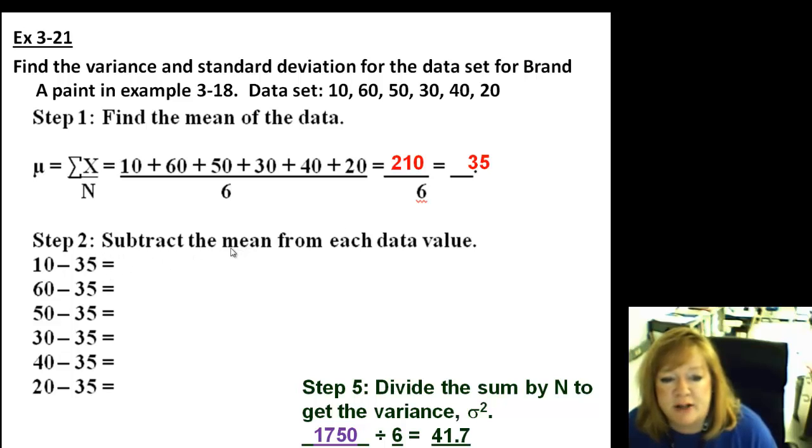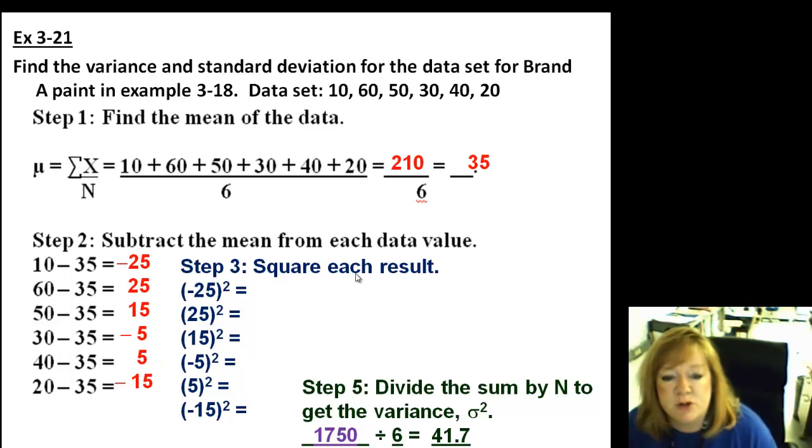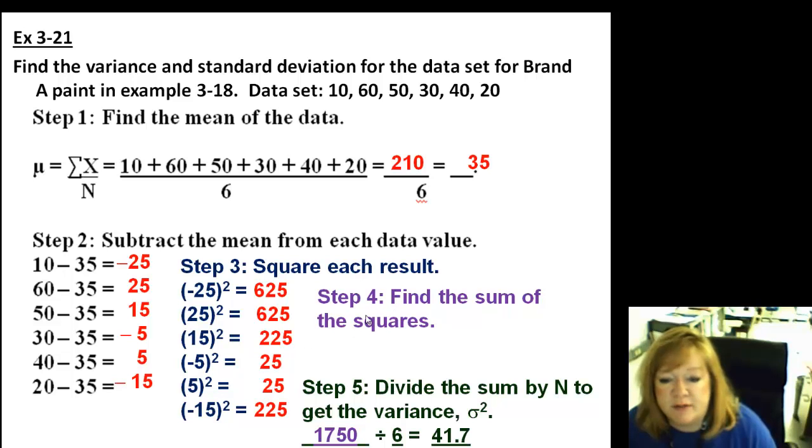Here's the new part. Step two, subtract the mean value from each of the data. So these are the data items, and they're subtracting 35 from each of them. So you get negative 25, 25, 15, negative 5, 5, and negative 15. So all we did was we subtracted the mean, which was 35, from each data item. Then step three, we're going to square each result. So this is 625, 625, 225, 25, 25, 225. Step four, find the sum of the squares. So we're going to add all these up. So this is the symbol for summing all these up. It's just saying it's the data item minus your mean squared, and then you add them up. That's what the sum means. So it's 1750.